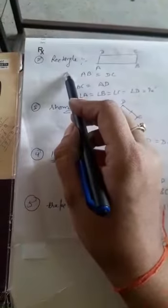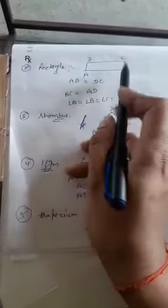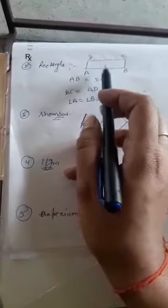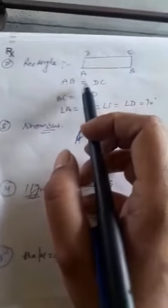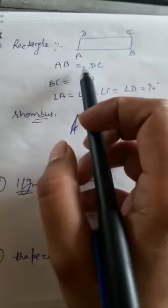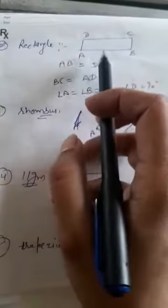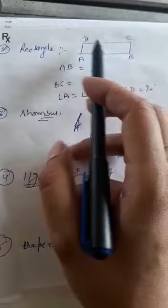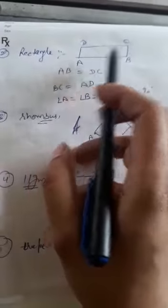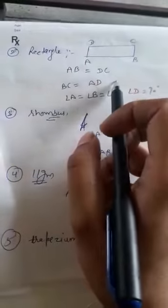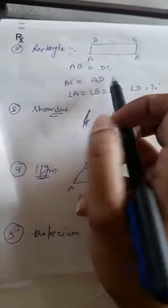The second type is a rectangle. A rectangle is a quadrilateral in which opposite sides are equal and each angle is 90 degrees. Here ABCD is a rectangle with AB = DC, AD = BC, and each angle is 90 degrees.